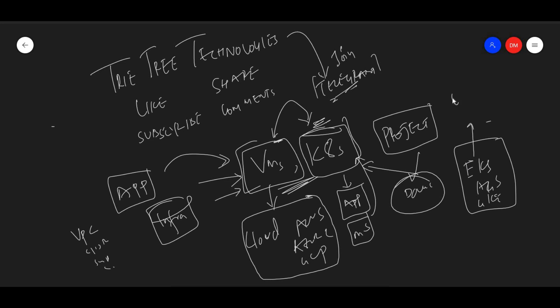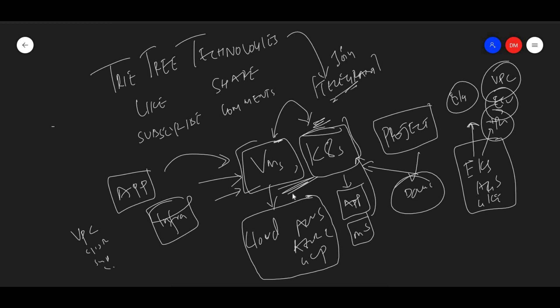You will be able to deploy using eksctl. If you want to deploy with Terraform, you will be able to deploy those resources. You can design it with EC2, VPC, auto-scaling, S3 buckets, DynamoDB, Redis, and the full infrastructure — all VMs in AWS.